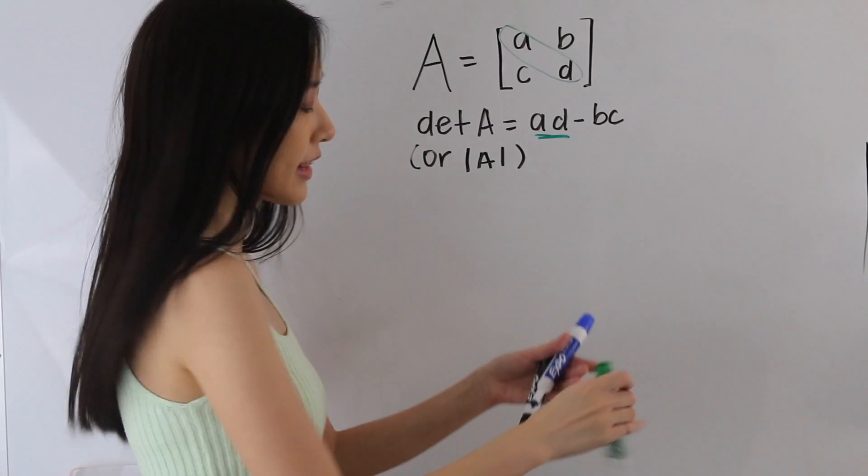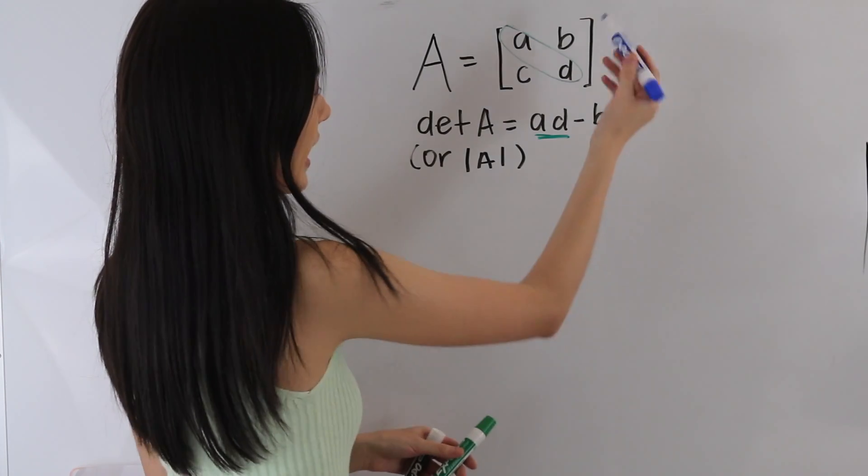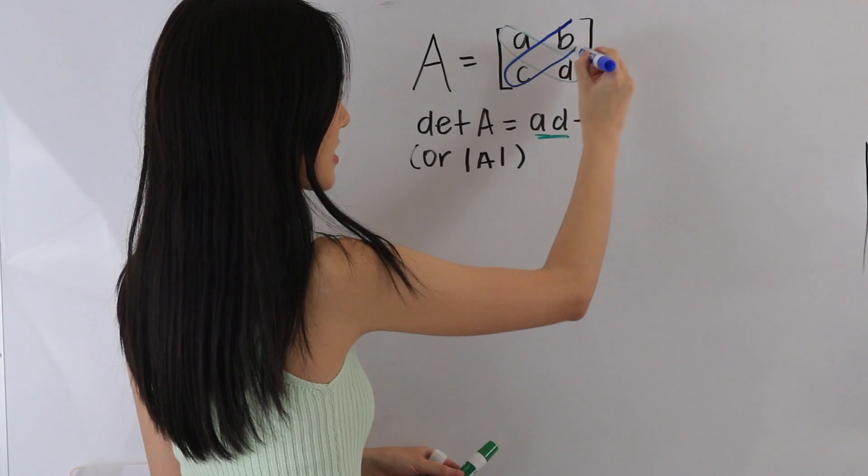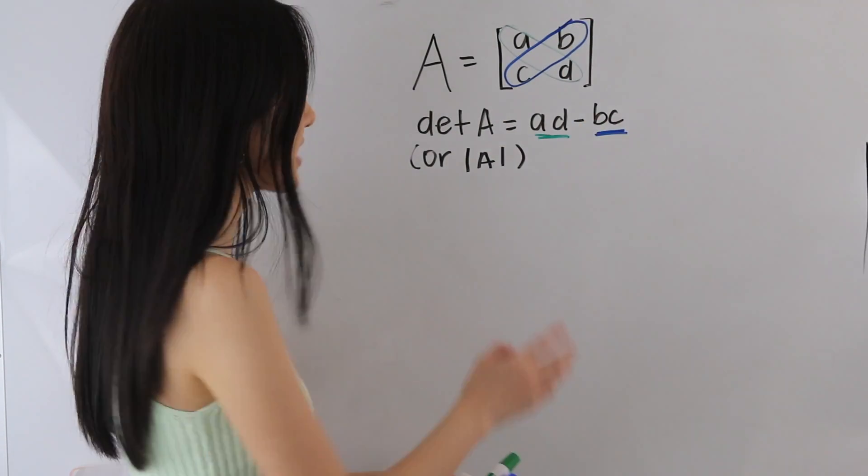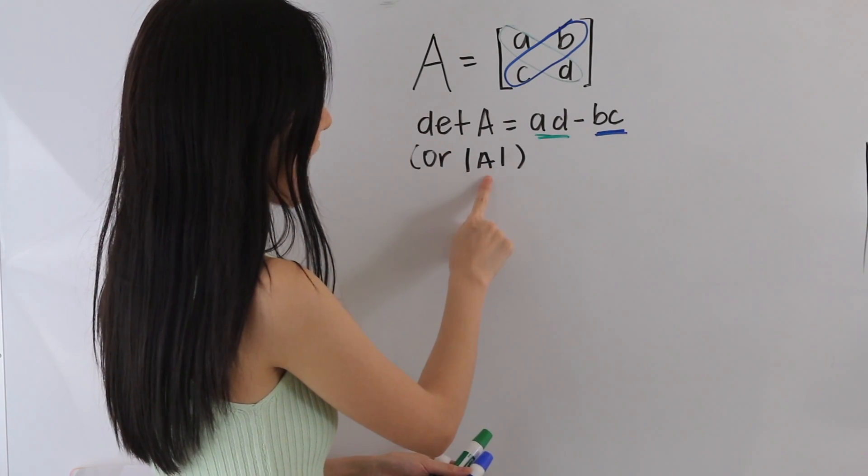And then we subtract that by starting at the right-hand corner of the matrix, multiplying these two terms in this diagonal here, and that's where this B-C comes from. And just a note, sometimes you'll see the determinant of A written as the absolute value of A.